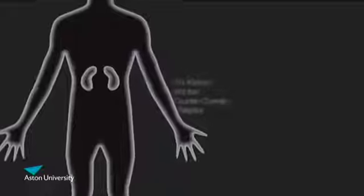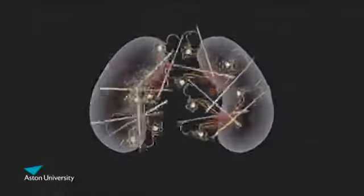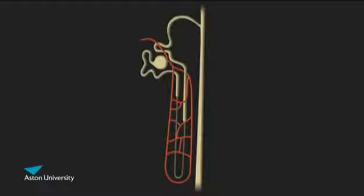The kidney is the body's filtration system and produces urine in its thousands of nephrons, the kidney's basic unit.